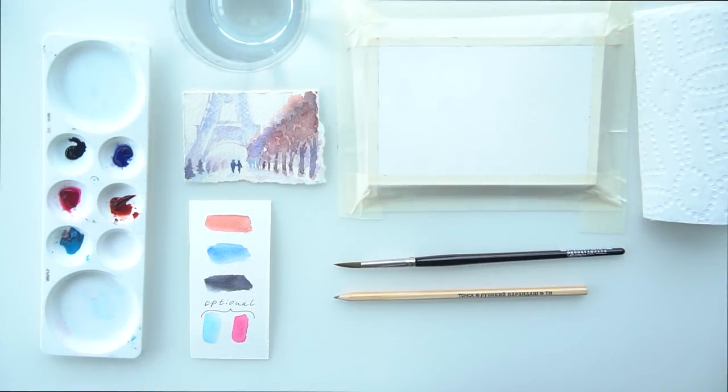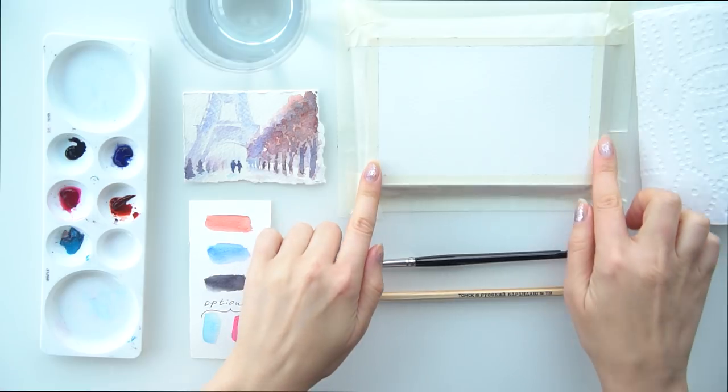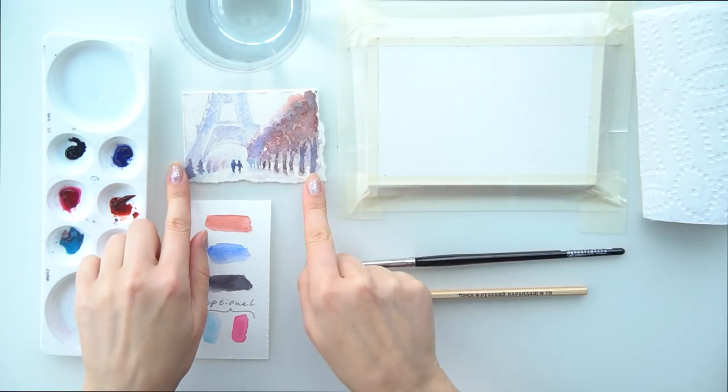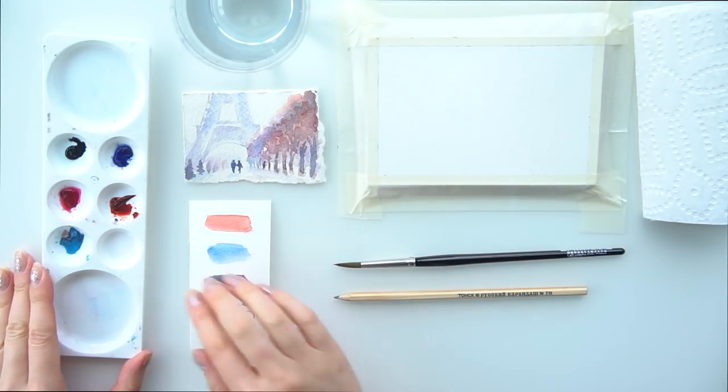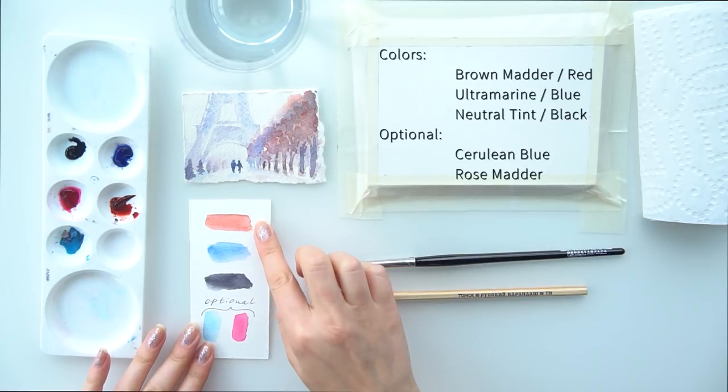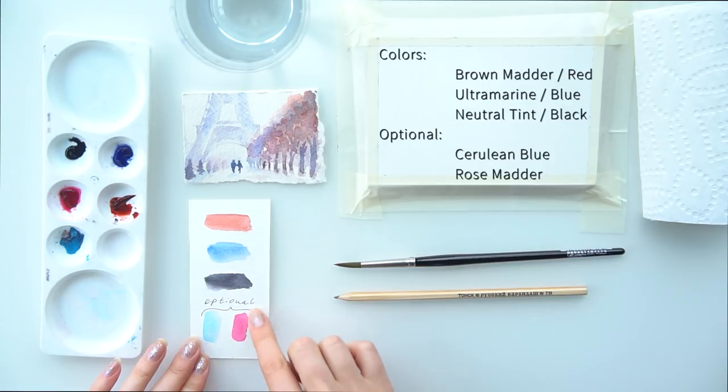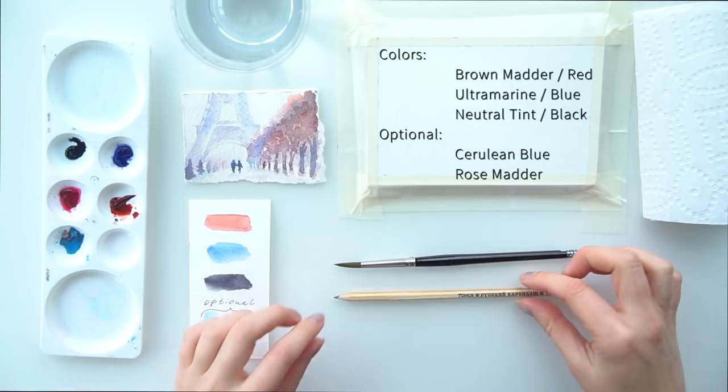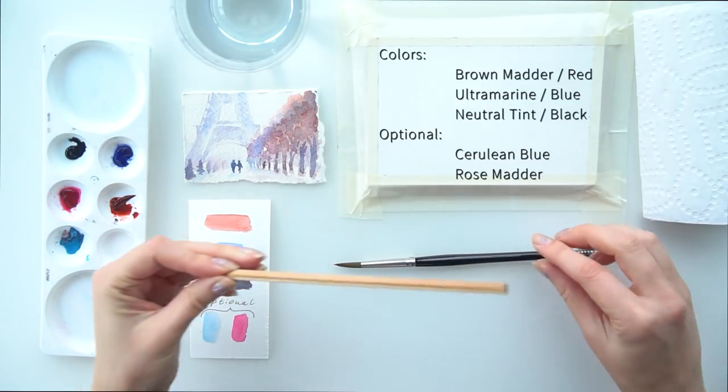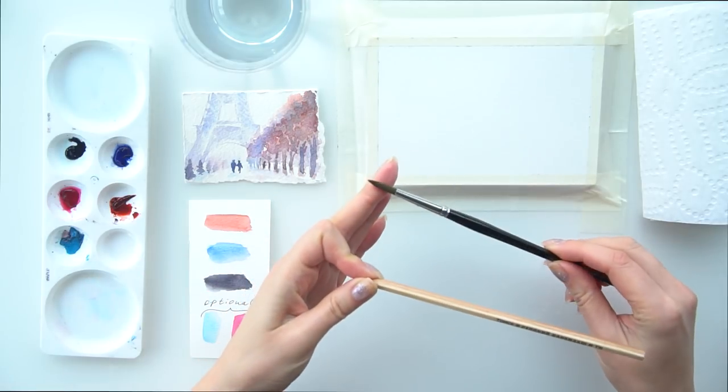I've prepared a watercolor pad with masking tape applied on the perimeter. I have a sketch. There is my palette and the colors are burnt umber, ultramarine, neutral tint, and optional cerulean blue and rose madder. Pencil and a nice watercolor brush with a pointy end.